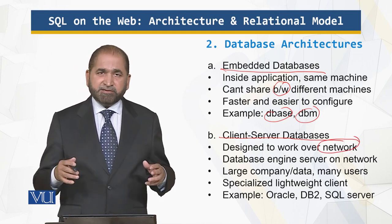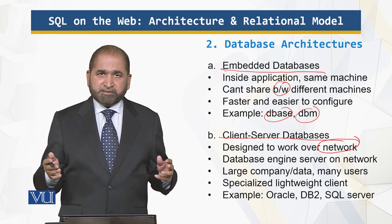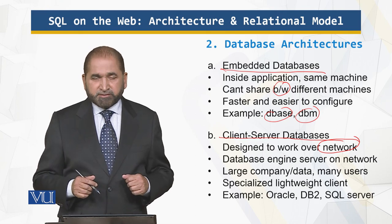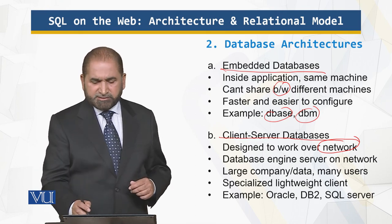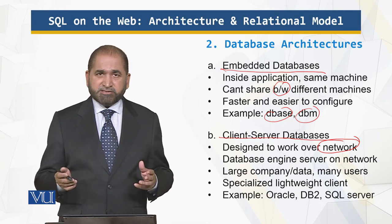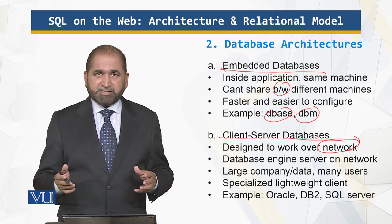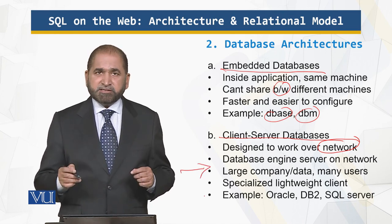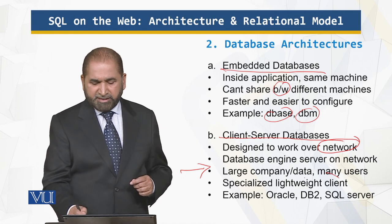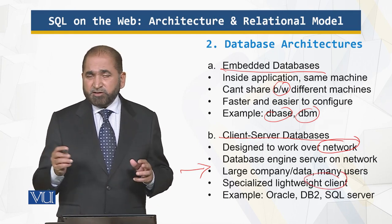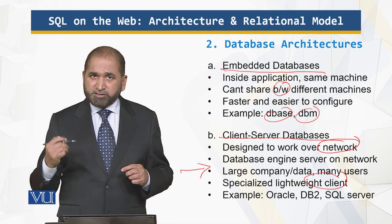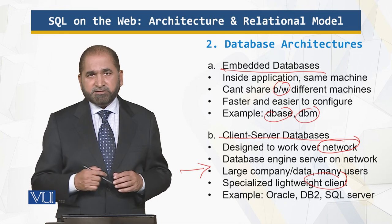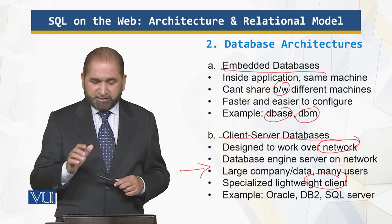The database engine accesses databases over the network. We may also have distributed databases, though that is not part of this course. Client-server databases are used by large organizations for large data sets and many users. They support specialized lightweight clients — you don't need a lot of processing power; you can access those databases using your browser. The big three examples are Oracle, DB2, and SQL Server.